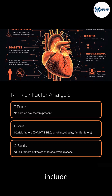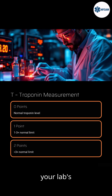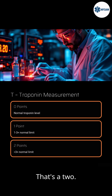Risk factors include hypertension, diabetes, hyperlipidemia, smoking, obesity, and family history. For Troponin, use your lab's reference range. If it's normal, score 0. If it's 1 to 3 times the upper limit, score 1. More than 3 times? That's a 2. Most labs now report high sensitivity troponin.